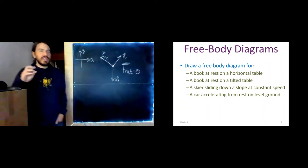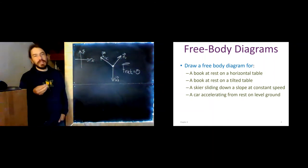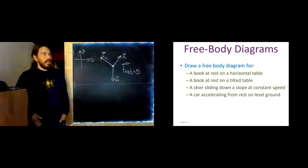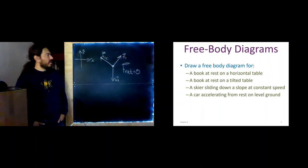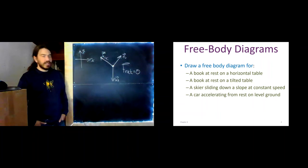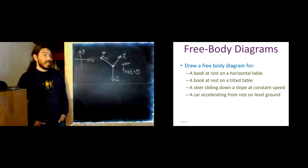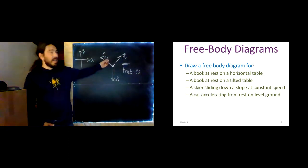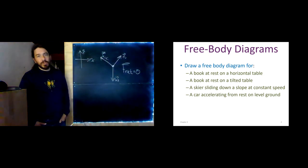So you can see here that this is kind of one of the powerful things about this representation, is that it really strips away the unimportant details. So whether it is a book sliding down an incline or a skier sliding down a slope, the free body diagram looks identical. And even that book at rest versus a skier sliding, the only difference is whether it's static or kinetic friction pointing uphill.